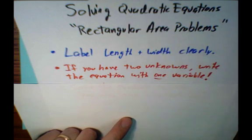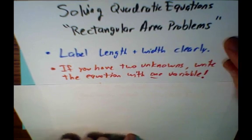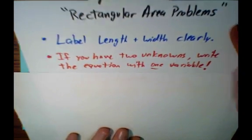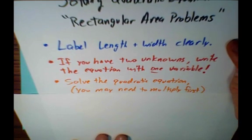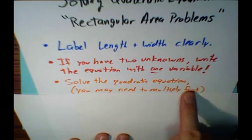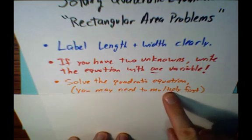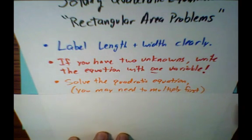When you solve a quadratic equation, you really only want one variable in your equation. Then you can solve the equation, but you may need to multiply first. Oftentimes, your equation will not look like a quadratic equation until you multiply, and then you'll see you'll have a squared term.